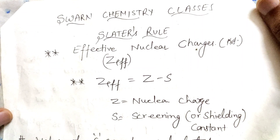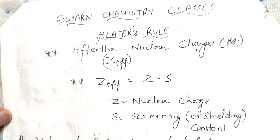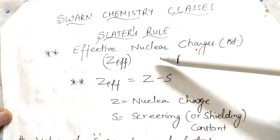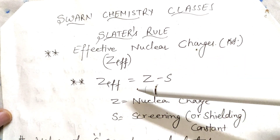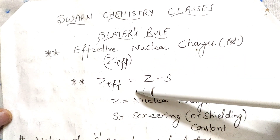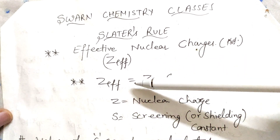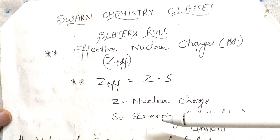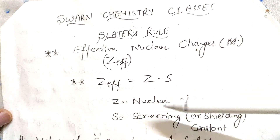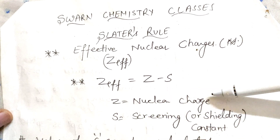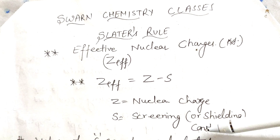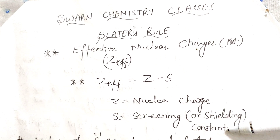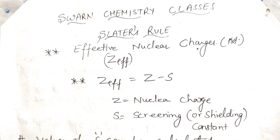Now let's learn how to calculate effective nuclear charges, that is Z_effective. Z_effective is given by Z minus S, where Z is the nuclear charge and S is the screening or shielding constant.